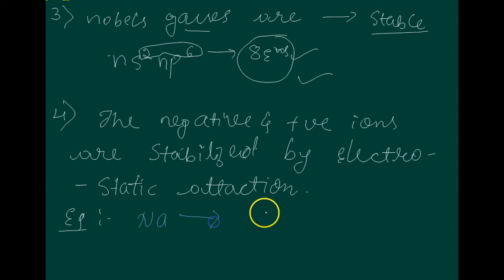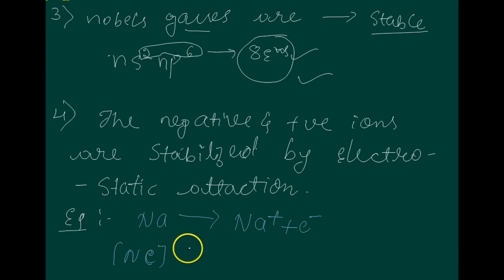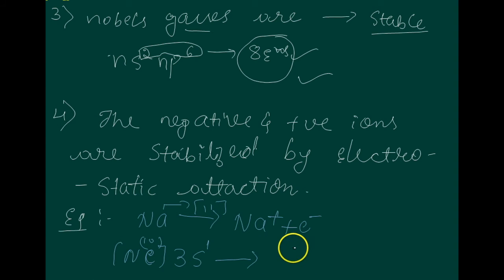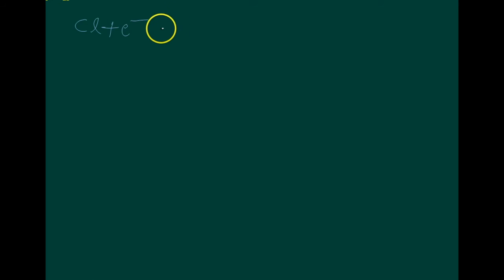Consider sodium losing an electron: Na → Na⁺ + e⁻. Sodium has the electronic configuration [Ne] with 11 electrons. By losing one electron, it cancels out to leave only the neon configuration. Next, consider chlorine gaining an electron: Cl + e⁻ → Cl⁻.